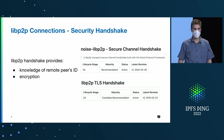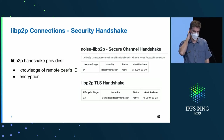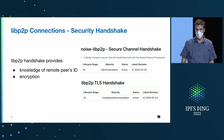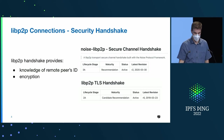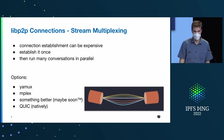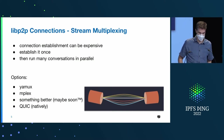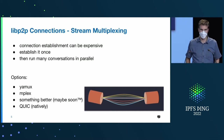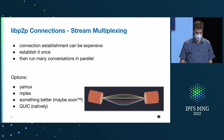In general, LibP2P connections are encrypted. We run a security handshake, and we have multiple options there — we use Noise and TLS 1.3. That gives us an encrypted connection and knowledge of the remote peer's ID. After a TCP connection is encrypted, we apply a stream multiplexer, something like Yamux or MPlex, or hopefully soon something better than that. For QUIC, we don't need to do all of this because QUIC connections are encrypted and stream multiplexed at the transport level.